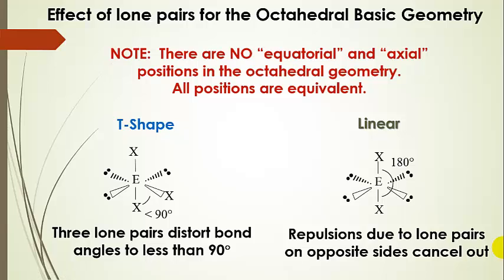Finally, a linear shape when we have four lone pairs on the central atom. They go 180 degrees apart from each other, and that leaves two atoms that are bonded 180 degrees apart. All of those repulsions cancel out also, so we end up with a linear geometry. Remember, we have a linear geometry for steric number two, for steric number five, and also for steric number six.